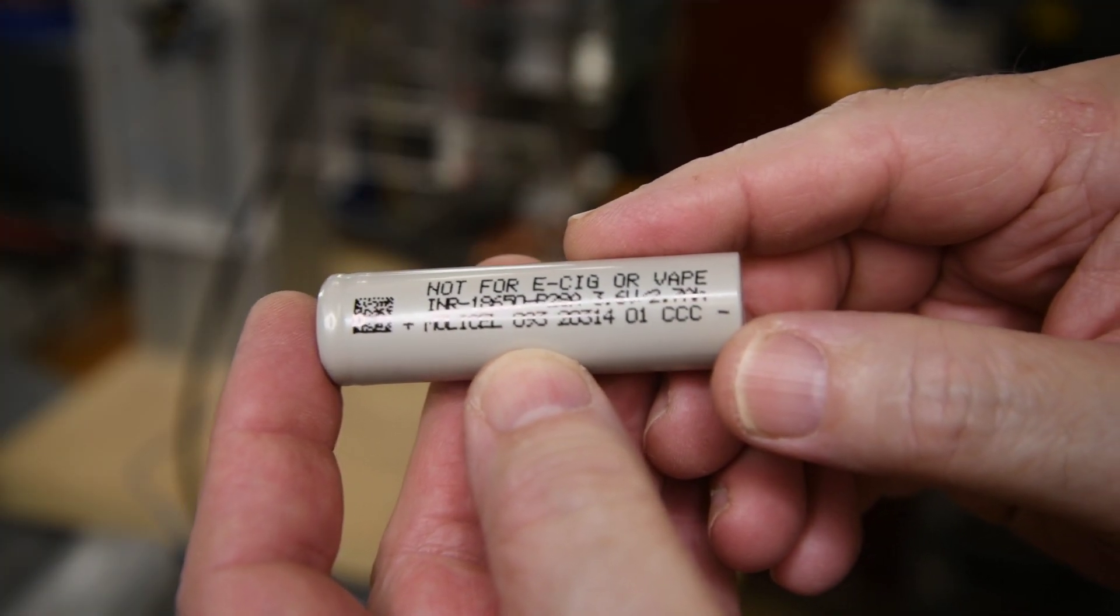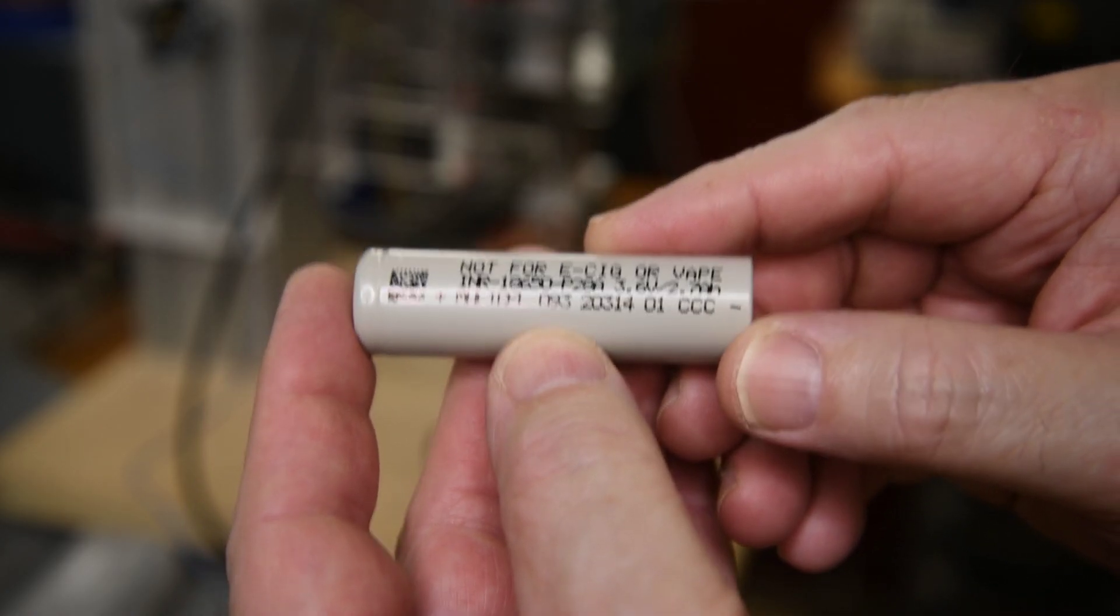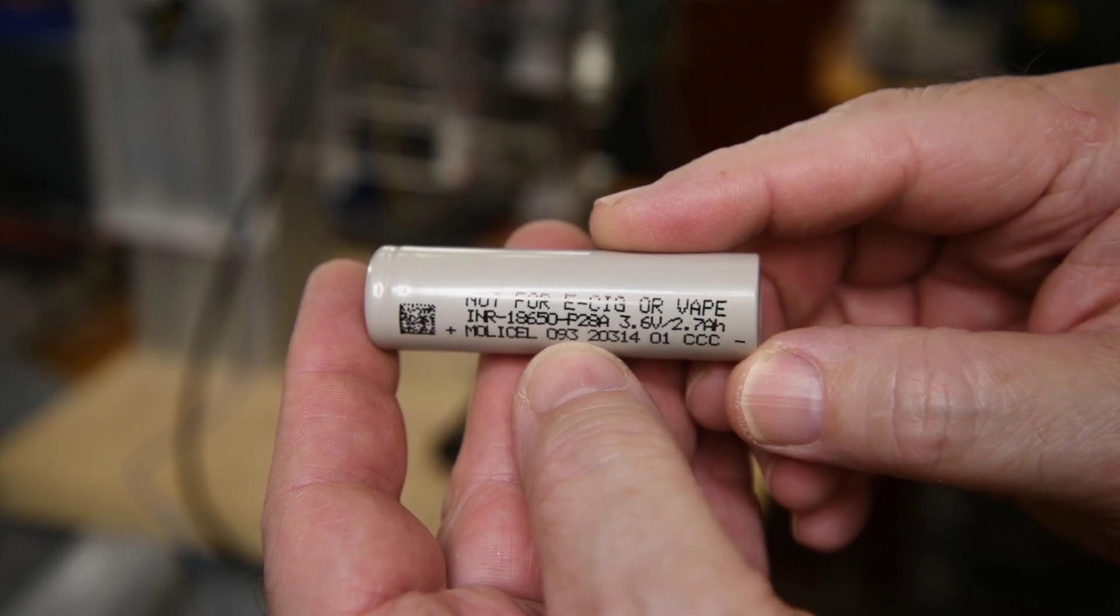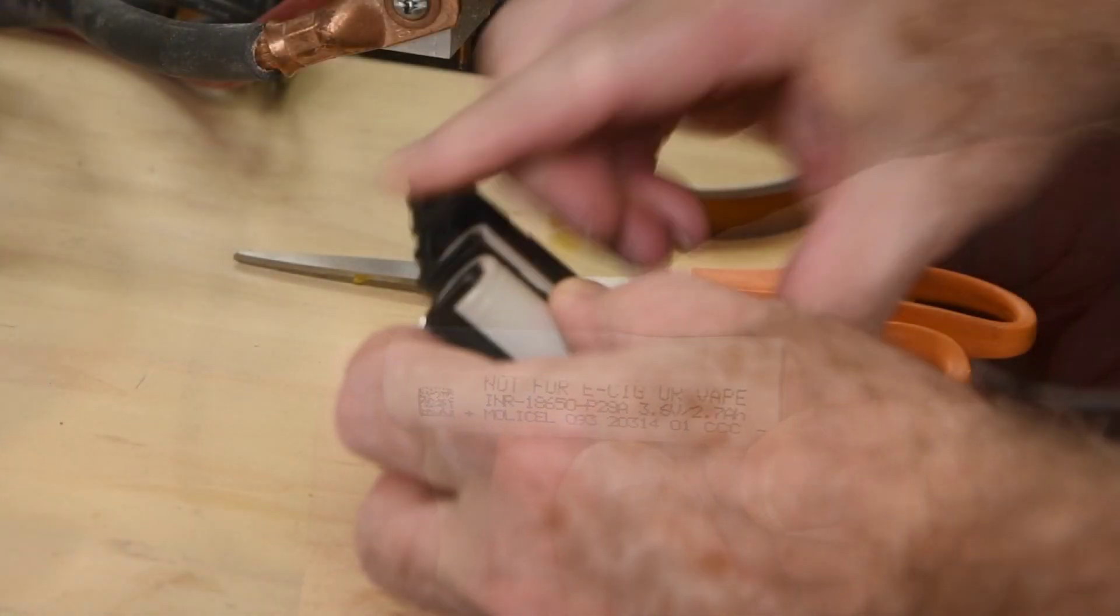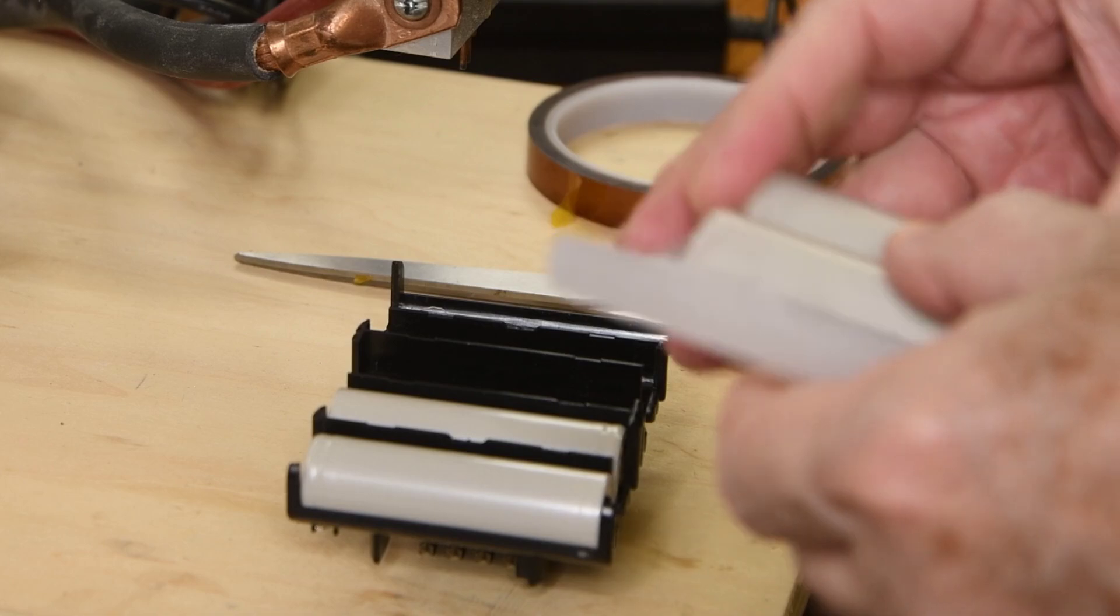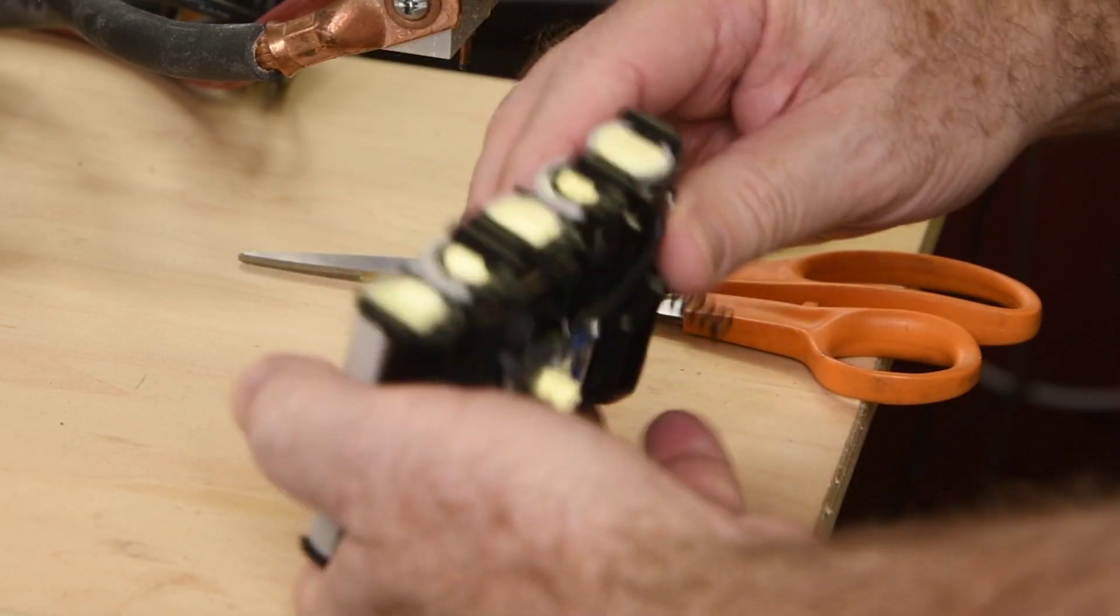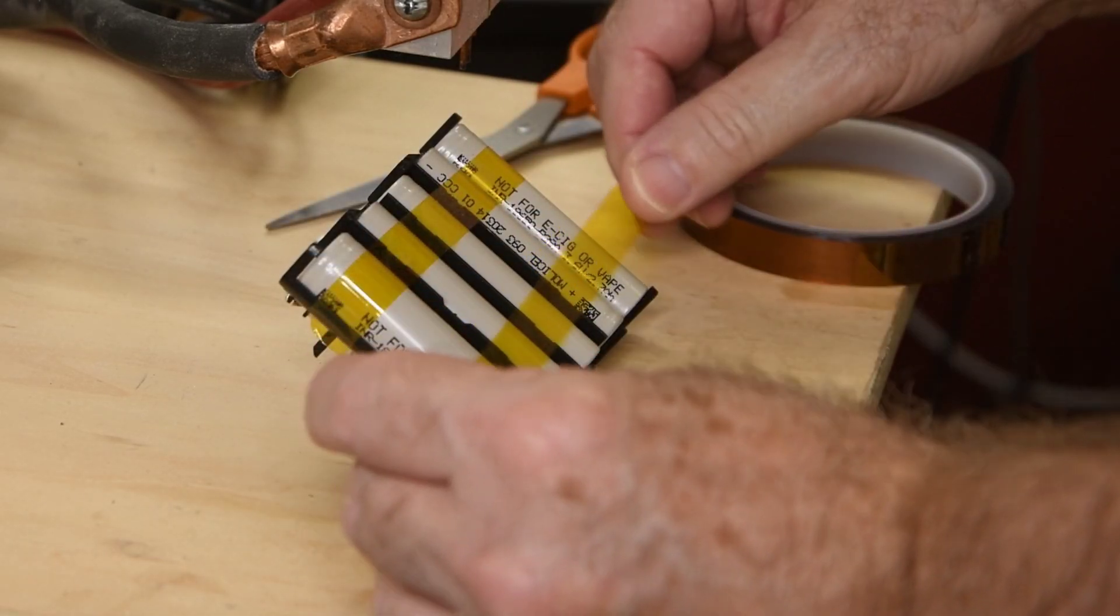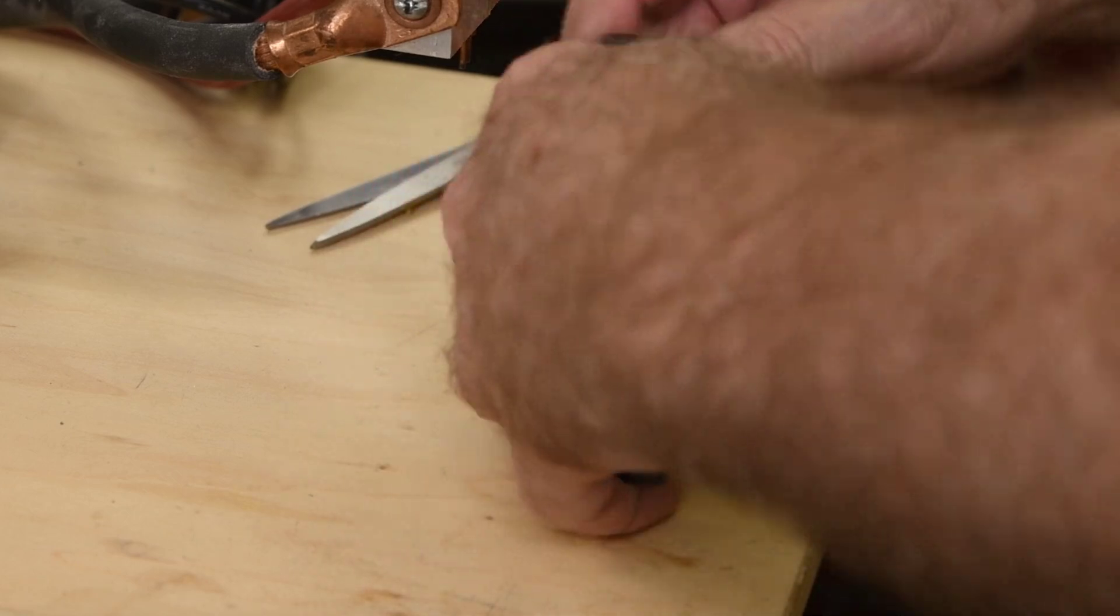Here are the replacement cells. If I'm reading the date code correctly, they were manufactured the third month of this year. About seven months old. I don't think that is a bad date for a small quantity purchase. I'm going to place the cells into the holder. I think it will work well to hold the cells in the proper position for spot welding. I will double check and make sure I have them in the proper orientation. I'll use tape to hold the cells in the holder. A strip at the top and bottom should keep them from moving around.